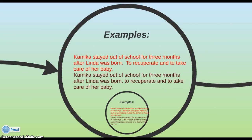Another example: 'Kamika stayed out of school for three months after Linda was born. To recuperate and to take care of her baby.' We've got an infinitive phrase — 'to recuperate and to take care of her baby' — standing alone, punctuated as though it's a sentence, but it's really a fragment. Easy fix: change the period after 'born' to a comma. 'Kamika stayed out of school for three months after Linda was born, to recuperate and to take care of her baby.' No fragment.